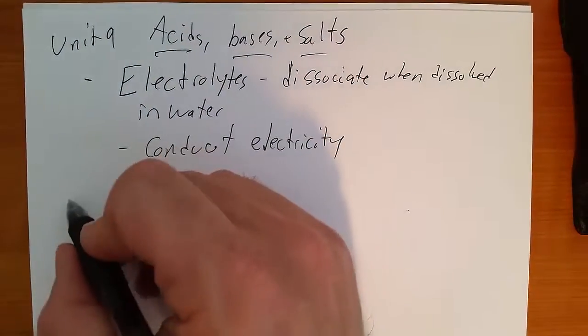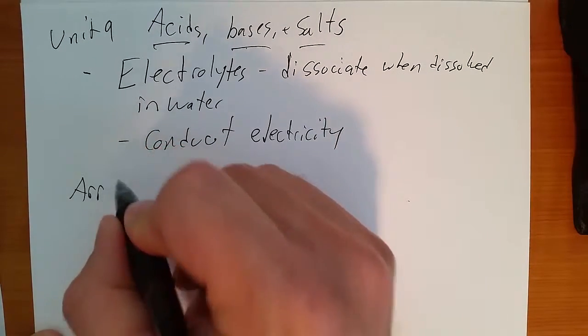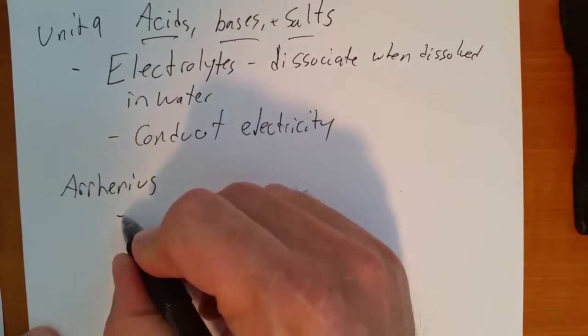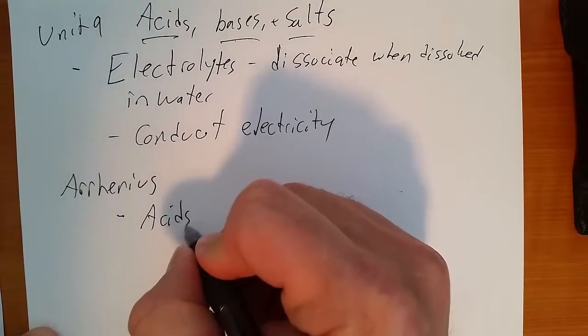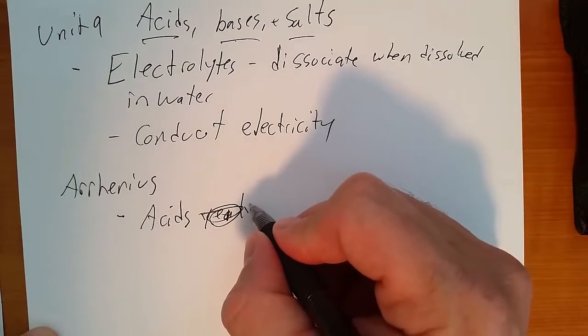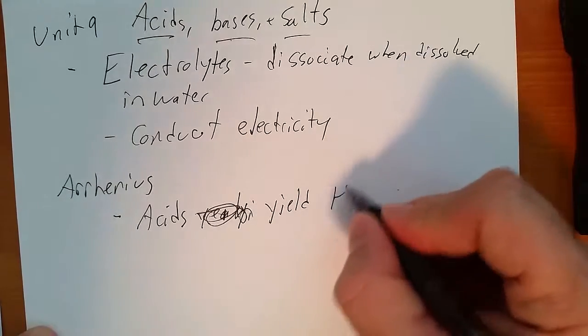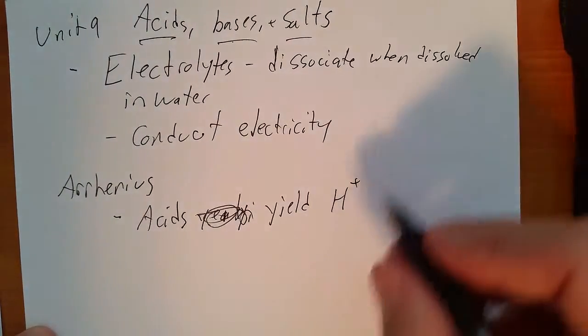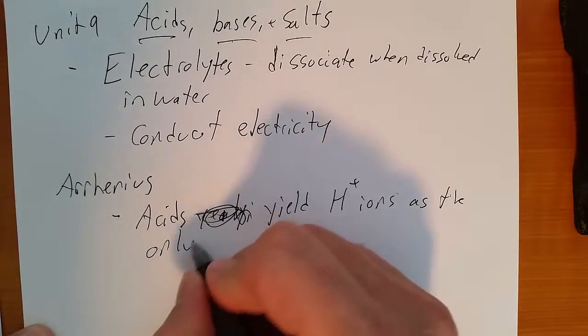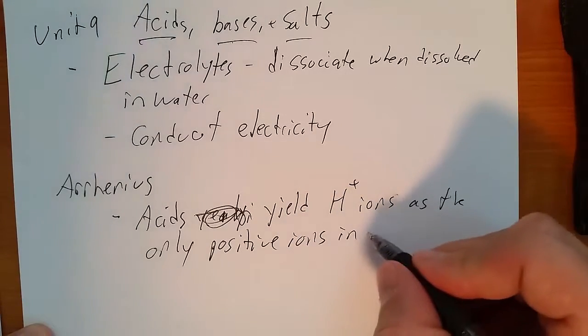All right, so the main theory that we talked about for acids and bases was Arrhenius Theory. Arrhenius Theory tells us that acids yield protons, H+ ions, as the only positive ions in solution.